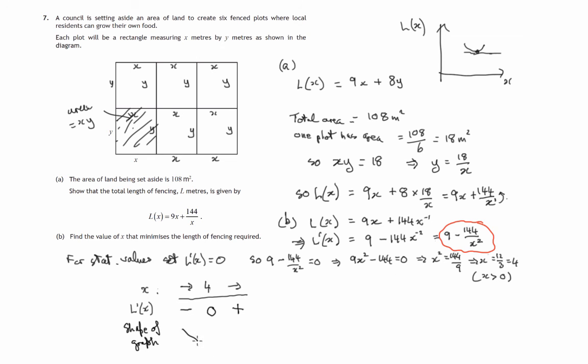negative gradient is going downhill. We know it's stationary at that point and then it goes uphill. So x equals 4 gives a minimum value for the total length of the fencing, L of x.